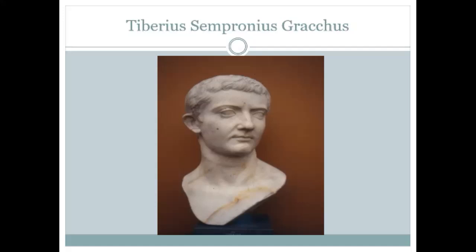He took his bill directly to the tribal assembly of the plebs, as was his right as a tribune. There had been certain precedents for such behavior, but for a bill this contentious that would disadvantage many senators, it was definitely an inflammatory act. The senate responded with a clever ploy: they contacted one of Tiberius's tribunician colleagues, Marcus Octavius, took him out to lunch, and promised him a real career if he would veto Tiberius's bill — and he did so.